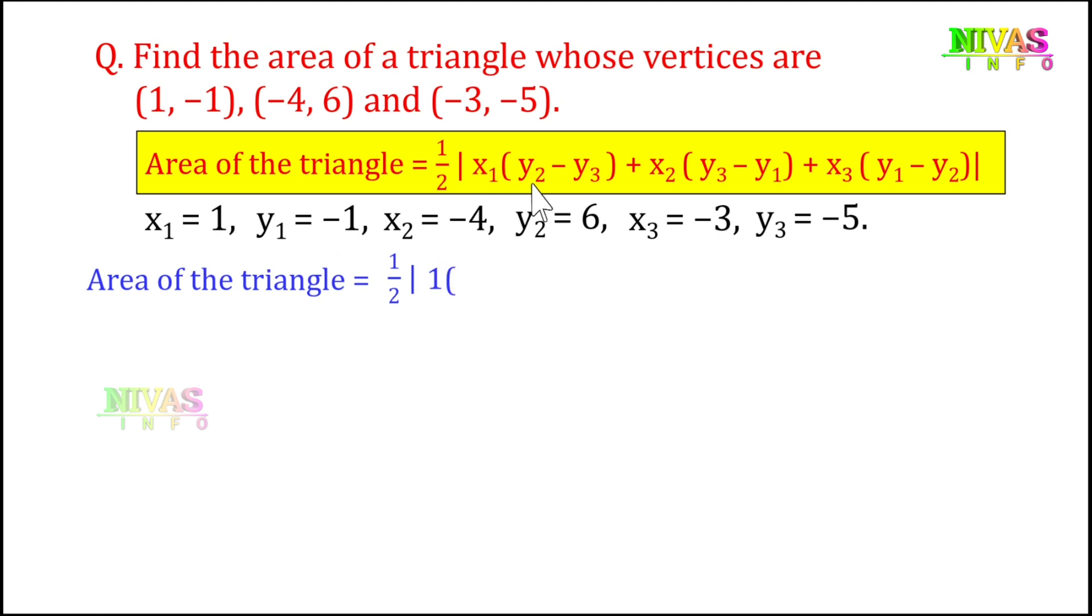Area of triangle equals one-half, then x1 value is 1, so 1 into bracket y2 minus y3, y2 value is 6, y3 is -5, so 6 minus -5. Plus x2 value -4 into y3 minus y1, y3 is -5, y1 is -1, so -5 minus -1. Plus x3 value -3 into y1 minus y2, y1 is -1, y2 is 6, so -1 minus 6.